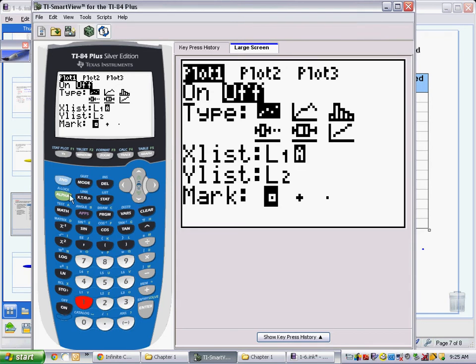For list 2, I would go second 2 for list 2. Once all the appropriate selections are made, I will go back to on and select it. Notice off is no longer highlighted, on is. And I can go to the graph.